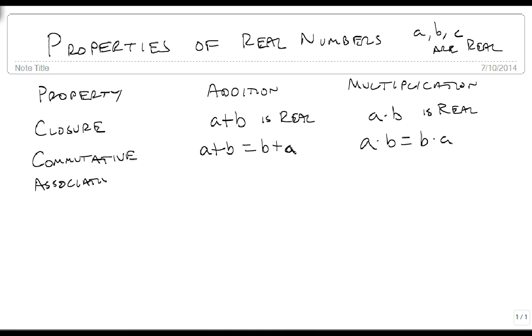The associative property says that if I have A plus B plus C, I can group the first two first, or I can group the last two first. And it doesn't matter which order I do this in. On the flip side, for multiplication, it's the same thing. It doesn't matter which order I multiply in. I can do the first two, or I can do the last two. And using both the associative and the commutative property, I can actually do the two on the outside before multiplying by the inside.